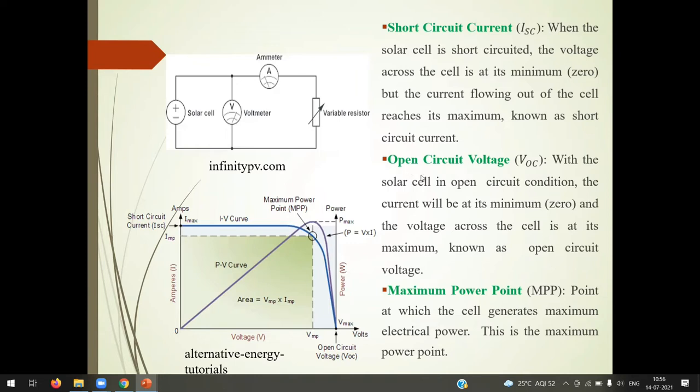Now, we will see open circuit voltage VOC. When solar cell is open, current is at its minimum. The current will be at its minimum. See here, current is at its minimum zero and here voltage is maximum Vmax. So, it is called open circuit voltage.